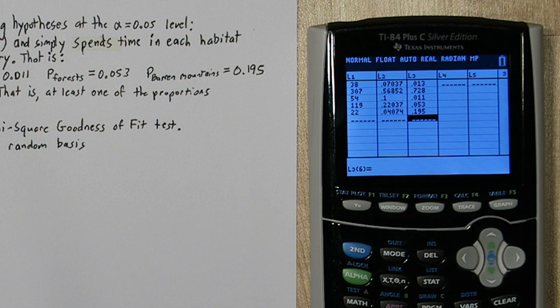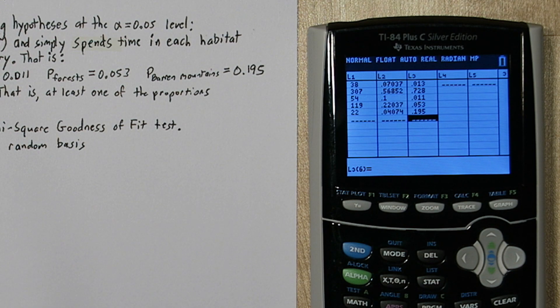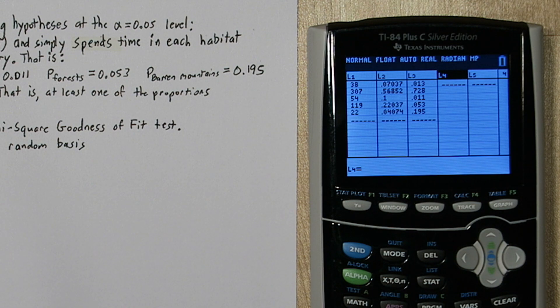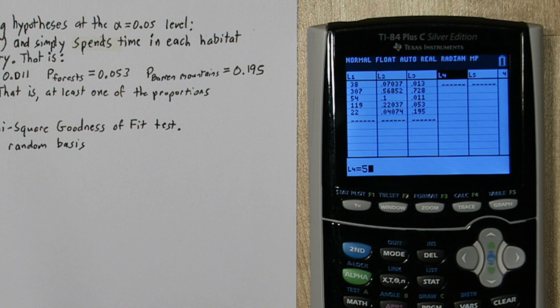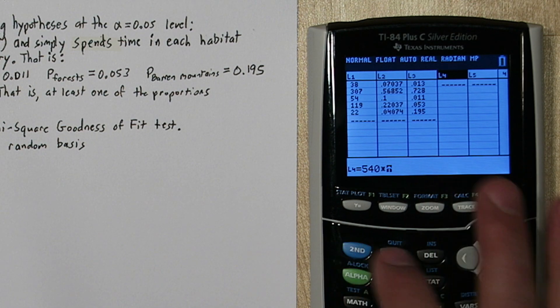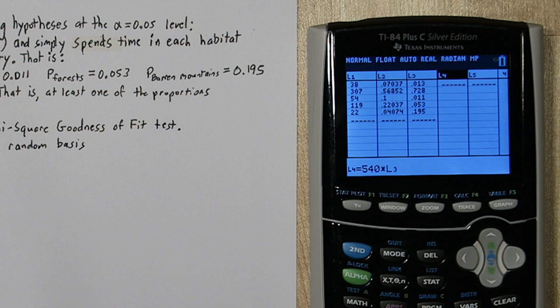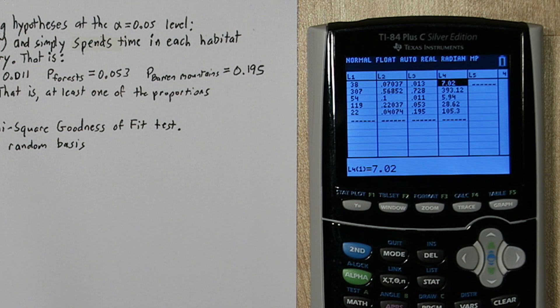Now our sample size was 540. So let's calculate how many of these point locations we'd expect for each habitat. So to do that, I'm going to go to list four and highlight it and use my function bar again. So I'm going to say 540 times second three. So it's going to multiply list three, our expected proportions, by 540.